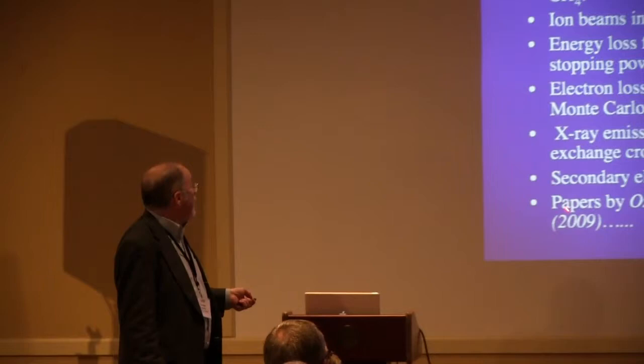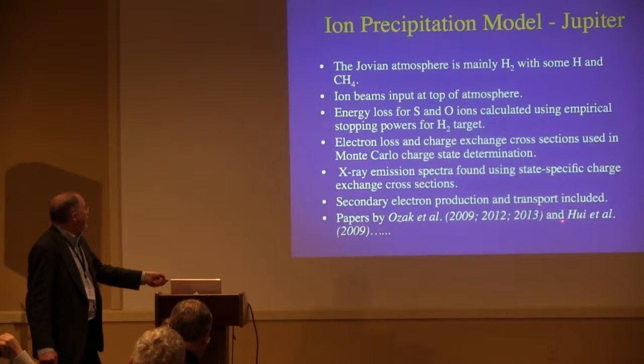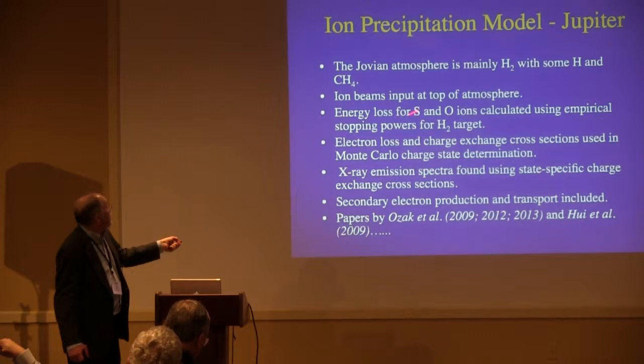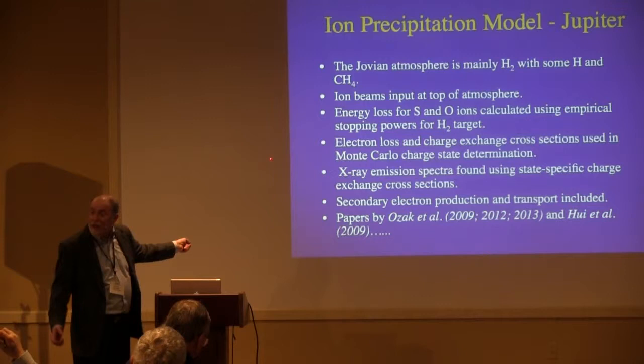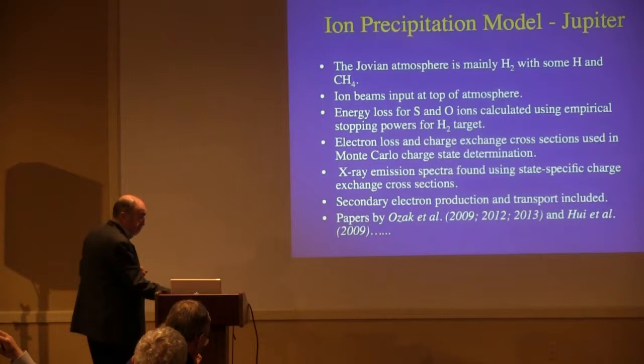Okay, the model. So Natalie Ozock, in her dissertation — she's now a postdoc doing solar-type plasma work at the Weizmann Institute in Israel — she did a lot of work on this, as did collaborators at Oak Ridge. In the model, you have an H2 atmosphere, you throw ion beams in at the top, you have stopping powers for the S and O ions. We put in electron loss and charge exchange cross-sections, ionization cross-sections, and our collaborator Dave Schultz, an atomic physicist, did a lot of calculations of state-specific charge exchange leading to specific principal quantum numbers and orbital angular momentum quantum numbers.